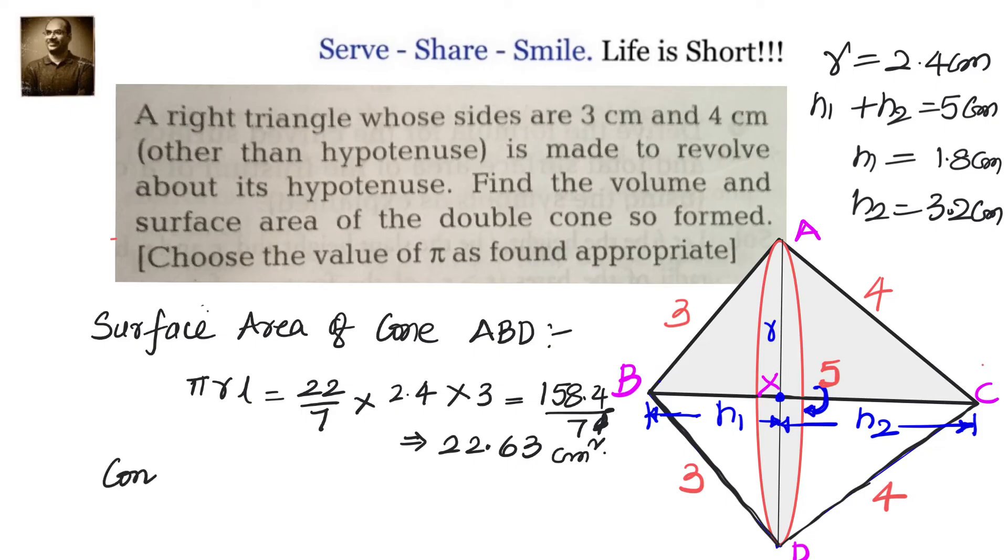Now let us do the surface area of cone ACD. Again the same formula πrl. We have 22/7 × 2.4 × l is 4 now. It will be 22/7 × 2.4 × 4. That will be 211.2 ÷ 7. Because 2.4 × 4 is 9.6, 9.6 × 22 is 211.2 ÷ 7. That will give us approximately 30.17 cm².